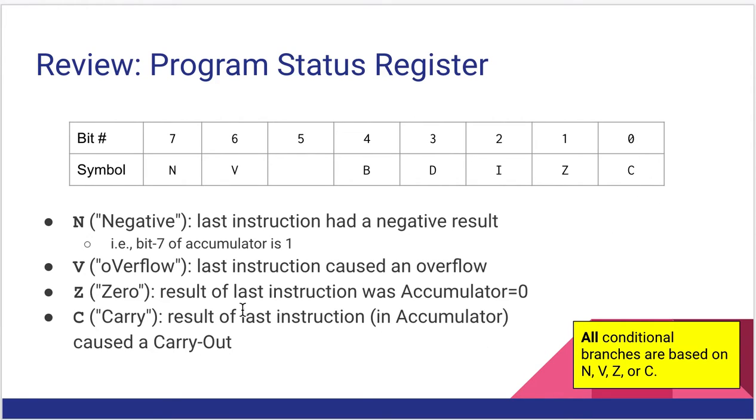And then bit 0 of the status register is our carry bit. It means that the result of the last instruction caused a carry out result. So it's set to 1 if there was a carry out, set to 0 if there wasn't. One of the reasons we're talking about this is all our conditional branches are based on one of these four flags: the negative flag, the overflow flag, the zero flag, or the carry flag.